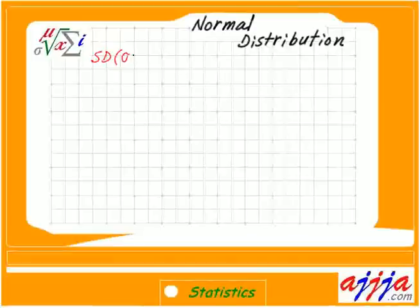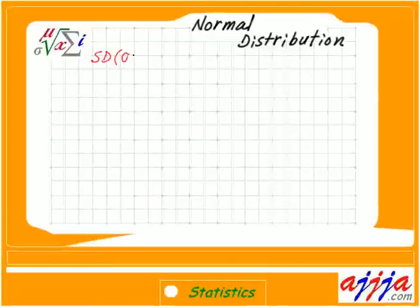That's why we have a population standard deviation or sample standard deviation. Now talking about standard deviation — SD. What is the symbol for that? We can use S for sample, or for the whole population we use this sign right here — lowercase sigma.